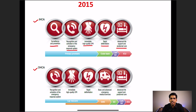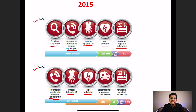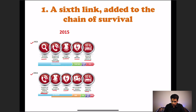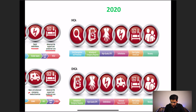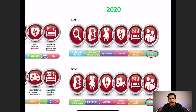Post cardiac arrest care was the fifth link in the chain of survival for IHCA patients. For OHCA, there is no surveillance and prevention — directly you have to activate, recognize, give immediate high quality CPR, rapid defibrillation, then advanced life support and post cardiac arrest care. Now in 2020, AHA added a sixth link called 'recovery' after post cardiac arrest care, for both IHCA and OHCA.